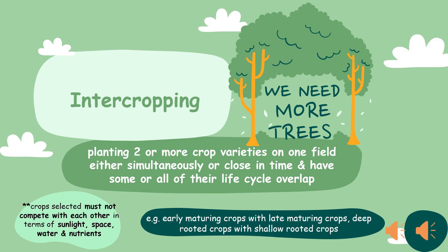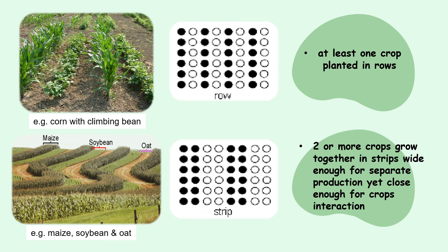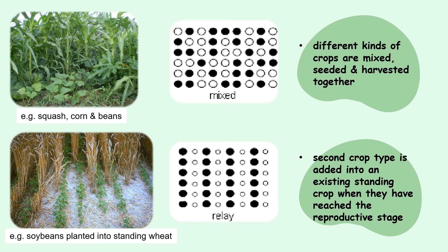The last one is intercropping, a practice of planting two or more crop varieties in one field either simultaneously or close in time. The crops will have some or all of their life cycles overlap. It is important to choose crops that do not compete with each other in terms of sunlight, space, water, and nutrients when planning for intercropping. For example, planting early maturing crops with late maturing crops. There are four methods of intercropping which differ in plant arrangement and time of planting: row intercropping, strip intercropping, mixed intercropping, and relay intercropping.